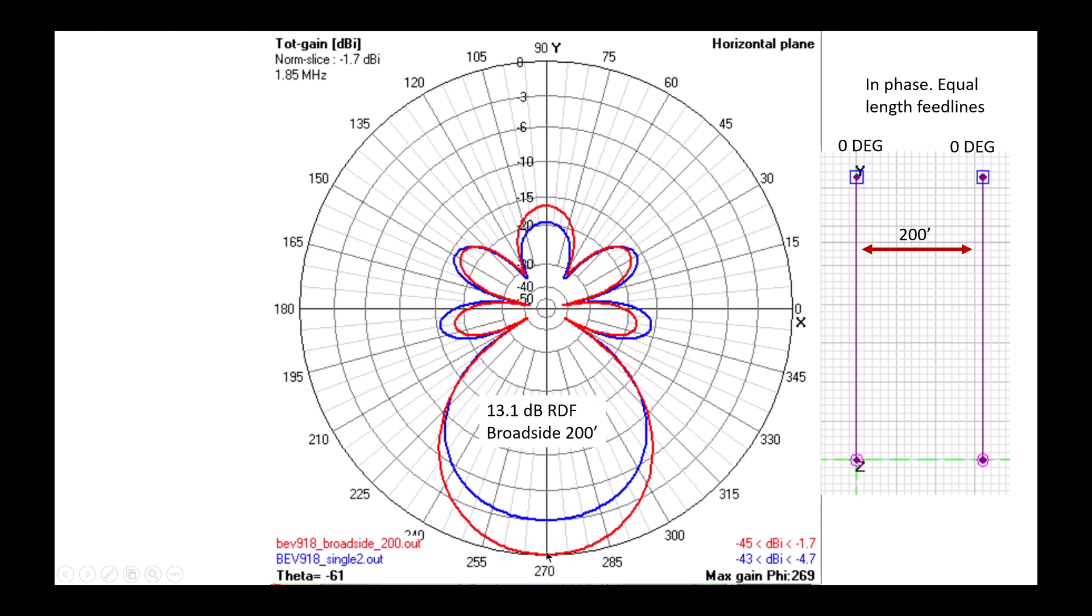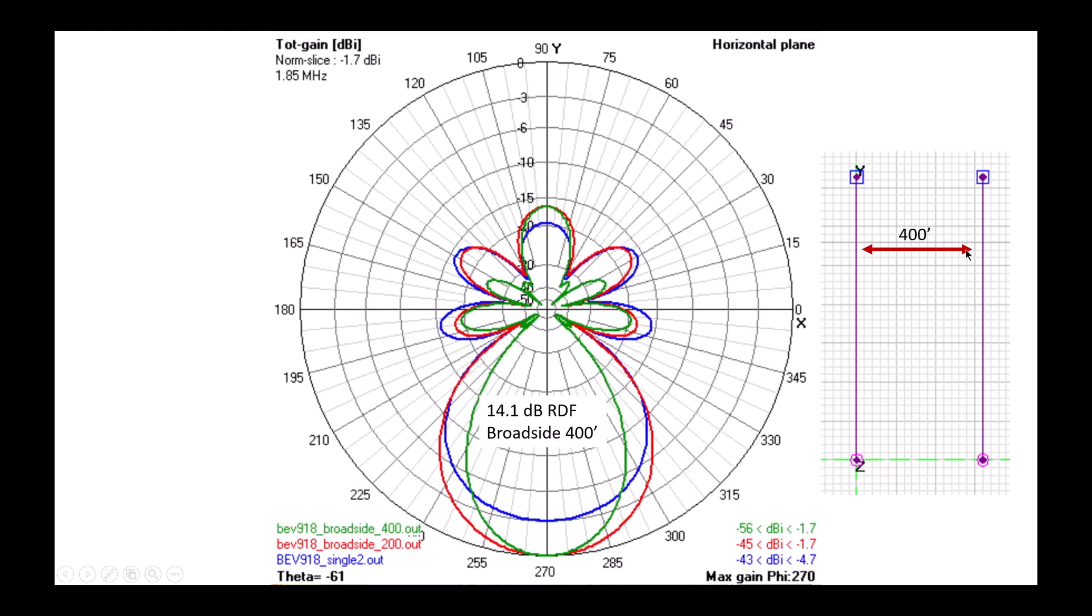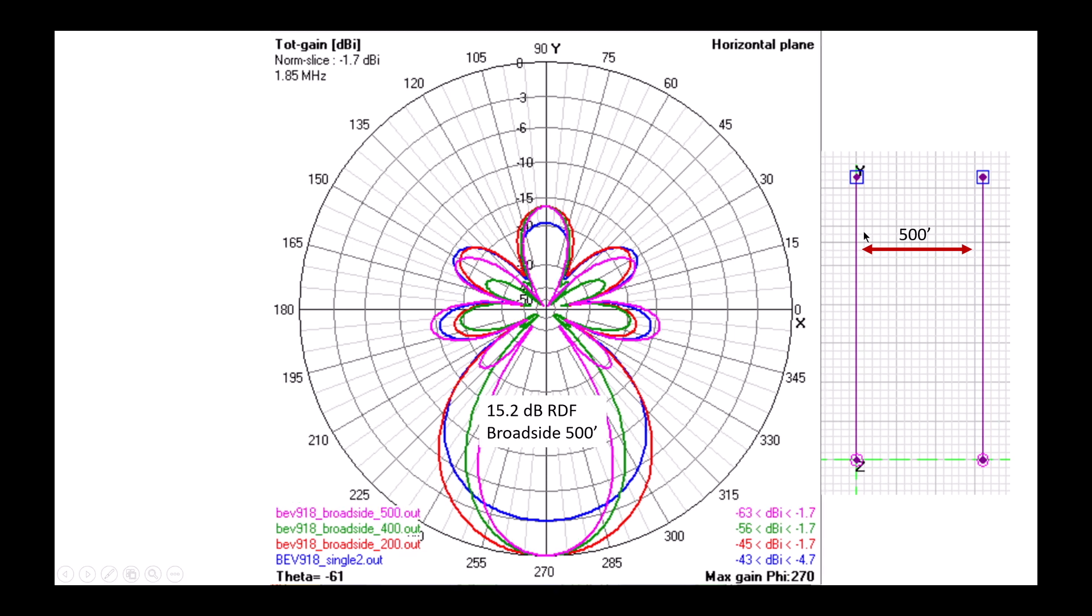If we space it out to 400 feet, you'll see that we've greatly narrowed the beam width and the RDF has greatly improved to 14.1 dB. If we space them 500 feet apart, the RDF has even improved more to 15 dB, and it's pretty clear to see with these all overlaid that's because the beam width is narrowing. And again, that's because of the broadside phasing, the nulling that we get from the broadside phasing system.